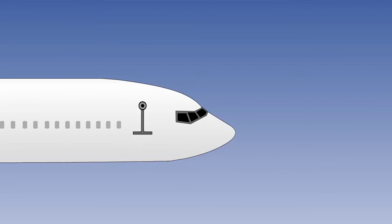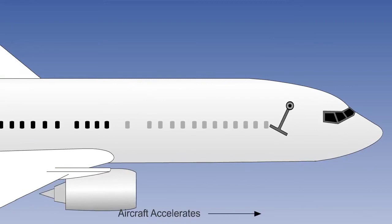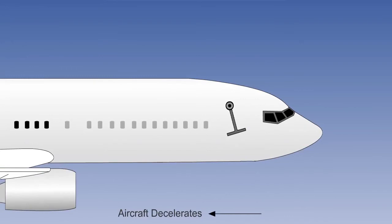Imagine a pendulum with the weight concentrated in the bottom, mounted in an aircraft. If the aircraft accelerates, the weight swings backwards. If the aircraft decelerates, the weight swings forwards.